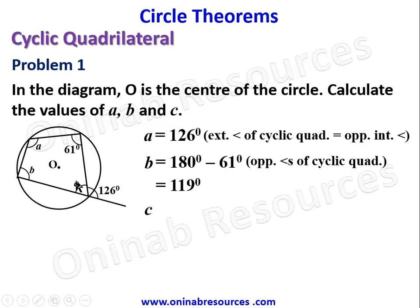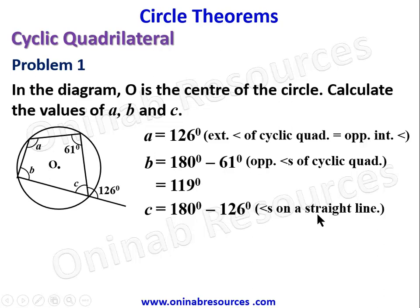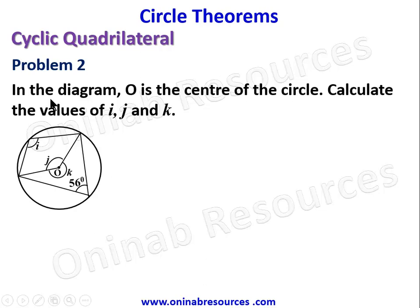For C, we use angles on a straight line with 126 degrees: C equals 180 minus 126, which gives 54 degrees. That's the end of the solution to Problem 1.